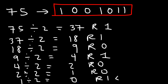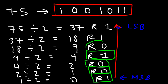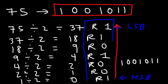At the bottom, you have the MSB or the most significant bit. At the top, you have the LSB or the least significant bit. The way you read it is from the most significant bit to the least significant bit — basically from the bottom to the top. So look at the numbers we have: reading from bottom to top, it's 1, 0, 0, 1, 0, 1, 1 — which is basically the same answer. So that's how you can get the same answer using successive division.